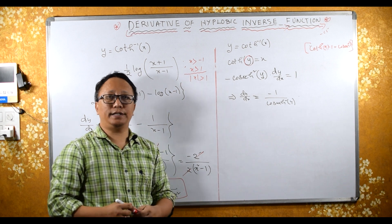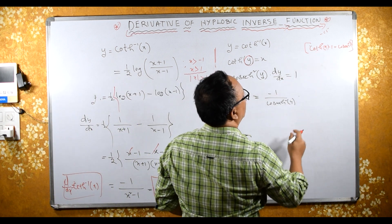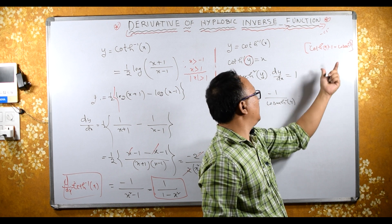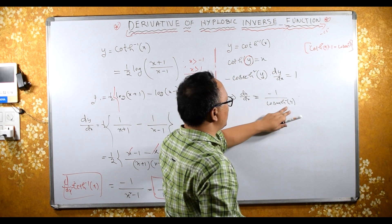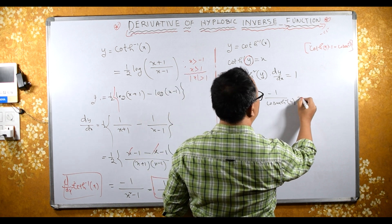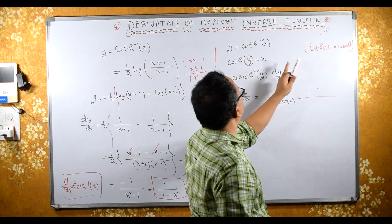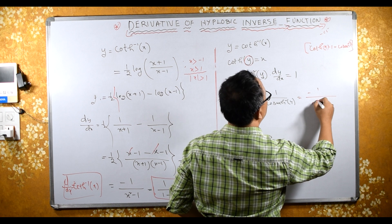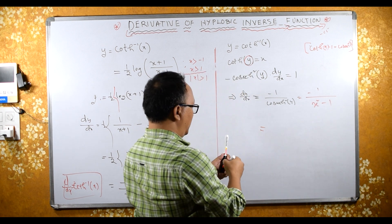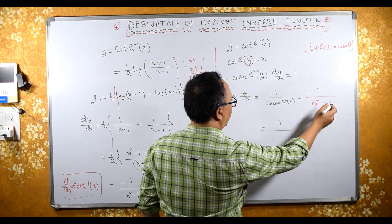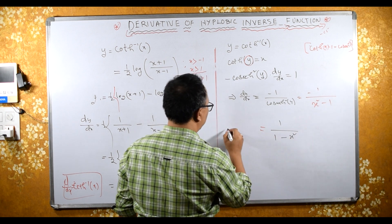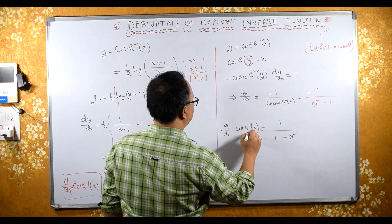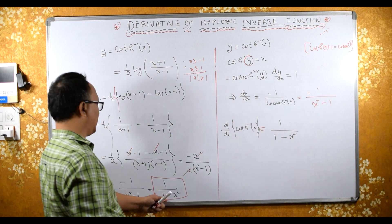Now let's use the identity for cosech: coth squared x minus 1 equals cosech squared x. We need cosech squared y. Since coth(y) equals x, we substitute: dy/dx equals minus 1 upon x squared minus 1. Sending the minus inside the denominator gives 1 upon 1 minus x squared. Therefore, d/dx of coth hyperbolic inverse x equals 1 upon 1 minus x squared — the same result as Method 1.